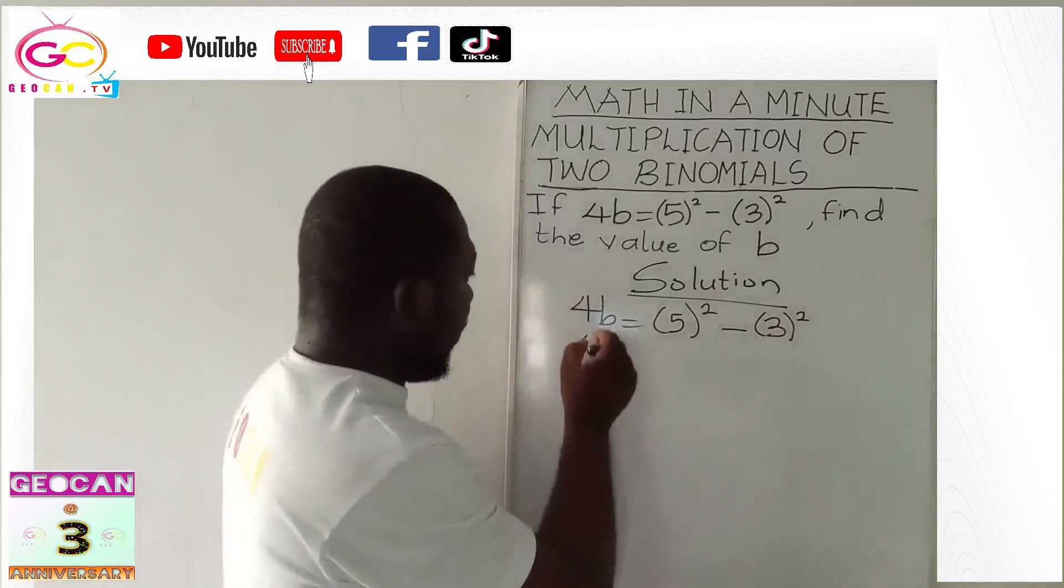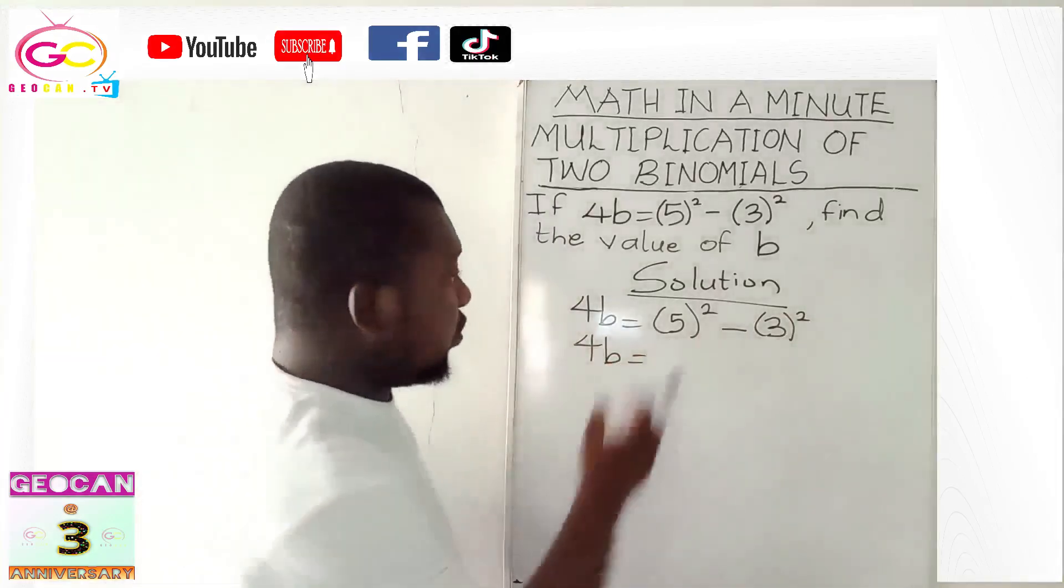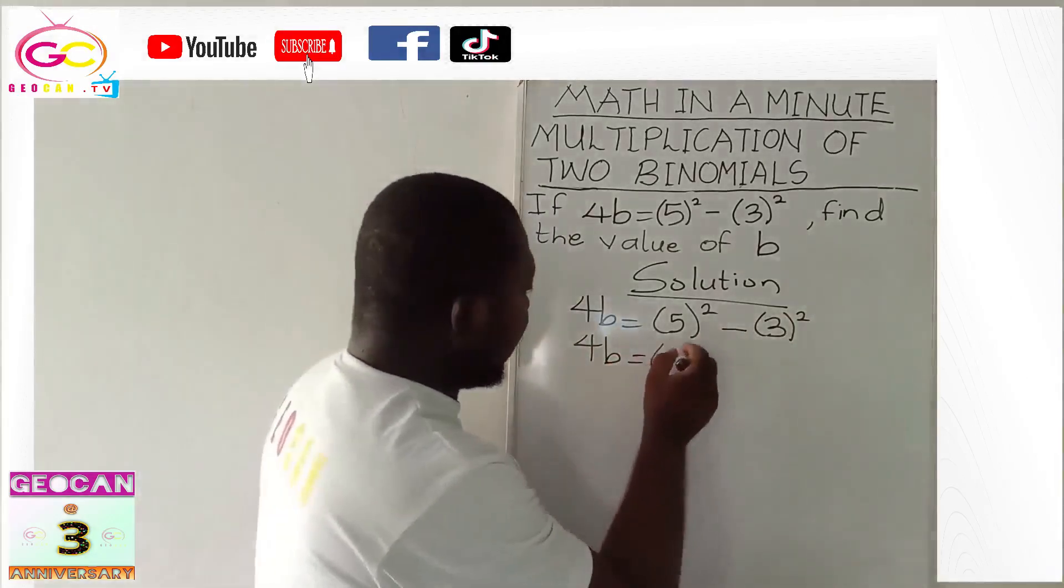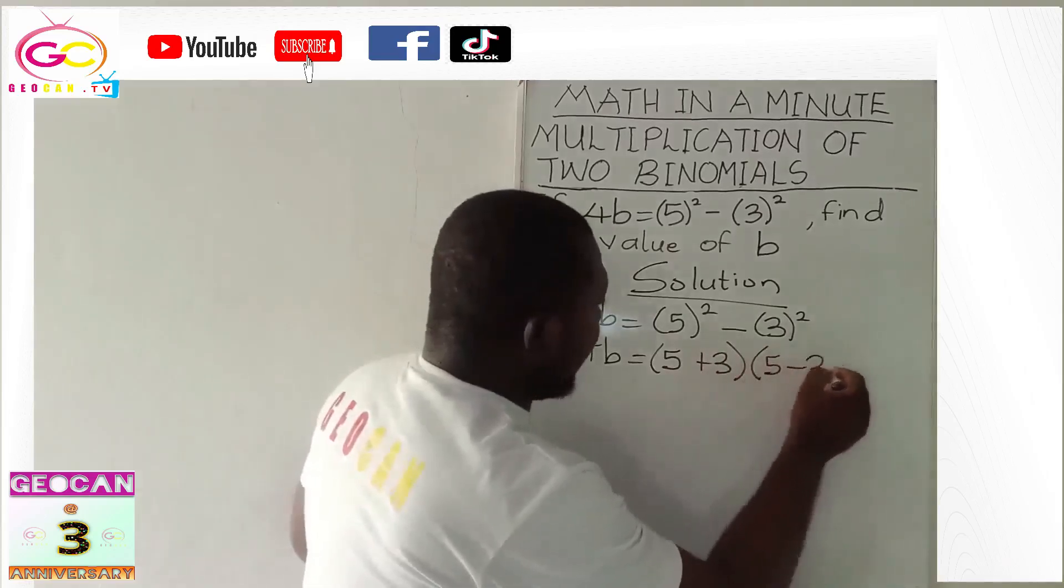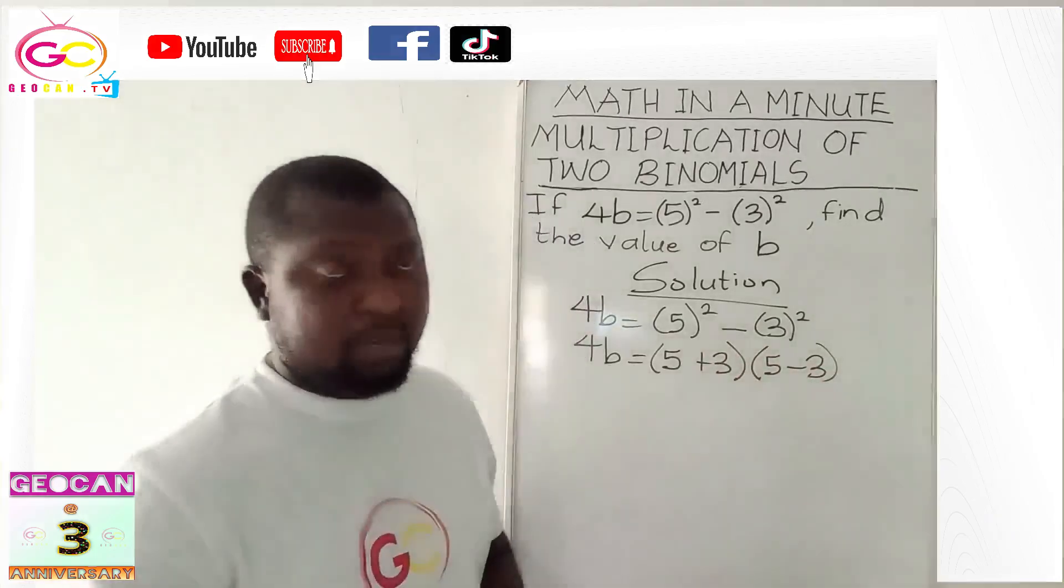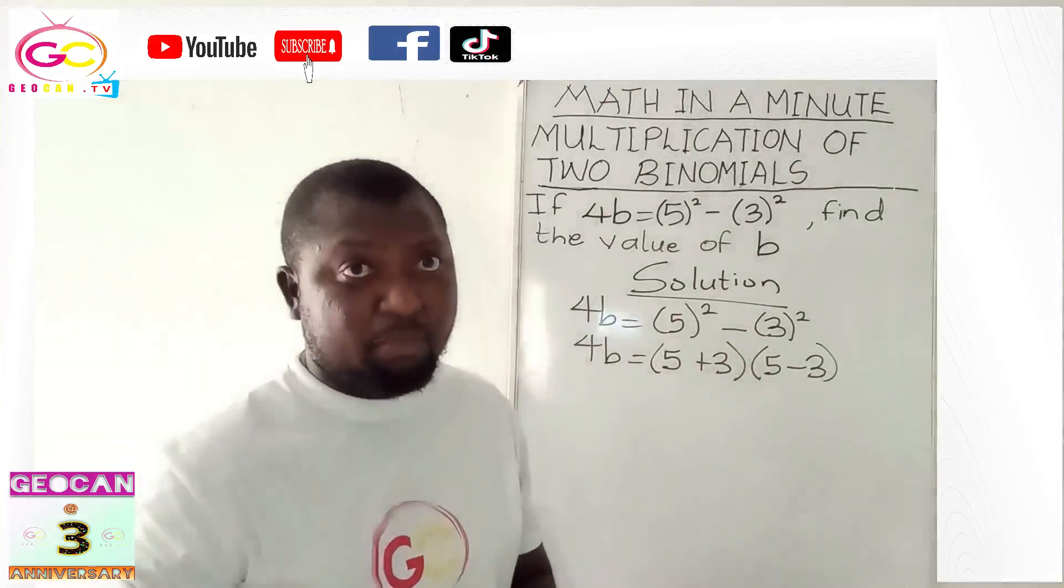So, we have 4b is equal to this. Can we write it as a difference of two squares, right? So, we can write it as 5 plus 3 bracket times 5 minus 3. It doesn't matter which way. The 5 minus 3 could come before the 5 plus 3. You'll get the same results.